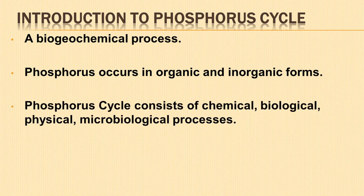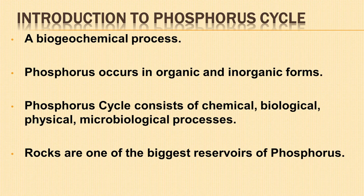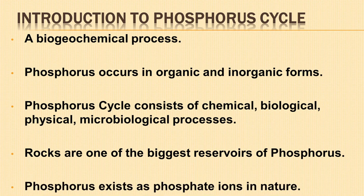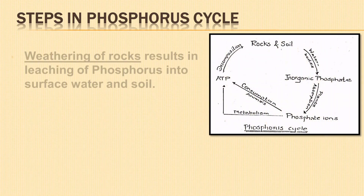The phosphorus cycle is a very slow process consisting of physical, chemical, biological, and microbiological processes. The biggest reservoirs of phosphorus are the sedimentary rocks and fossil bone deposits formed in past geological ages. Most of the phosphorus exists in nature as phosphate ions.